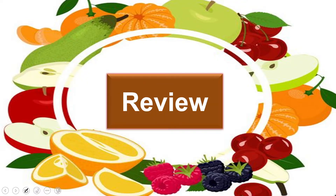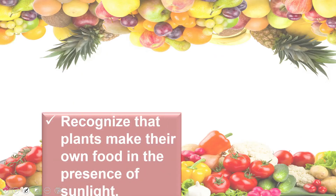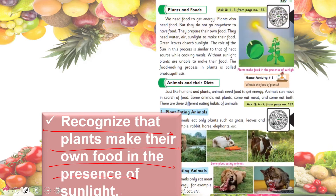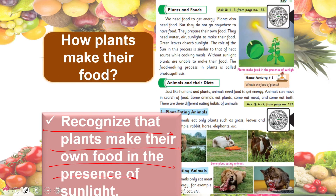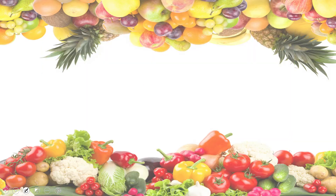In the first lecture, students were able to recognize that plants make their own food in the presence of sunlight. Animals need energy too, but plants make their own food through a process called photosynthesis. Plants make their food using sunlight, air, and water — and this process is called photosynthesis.